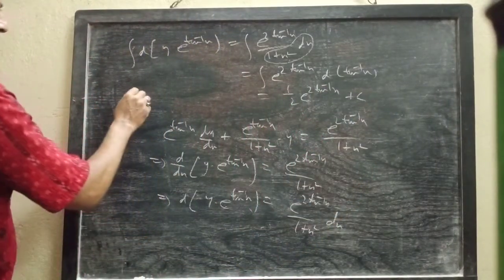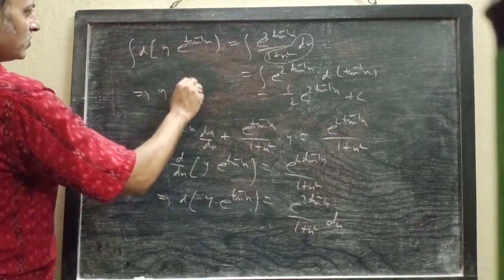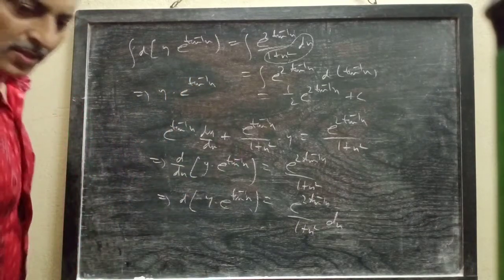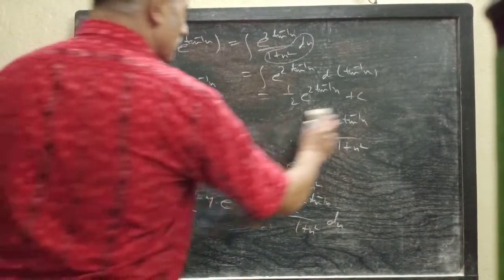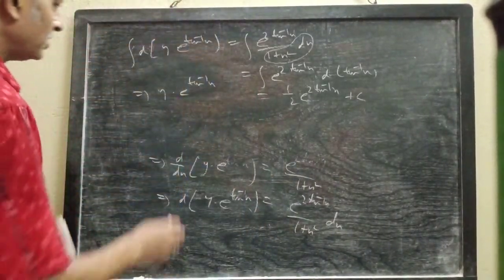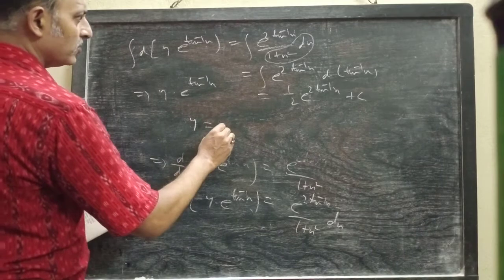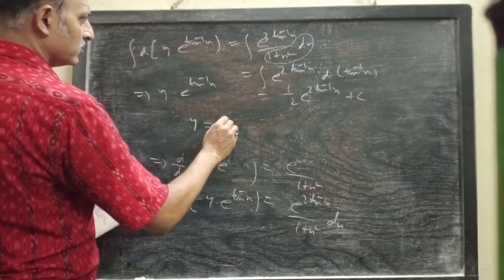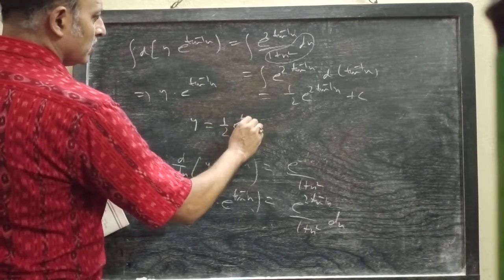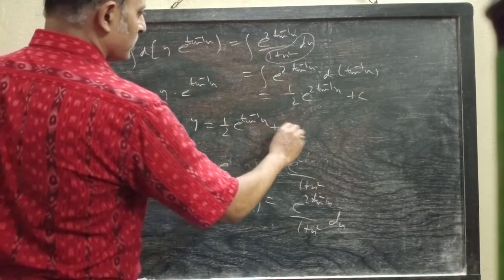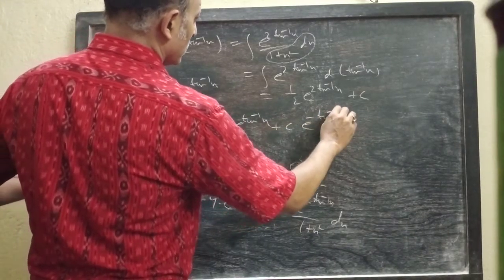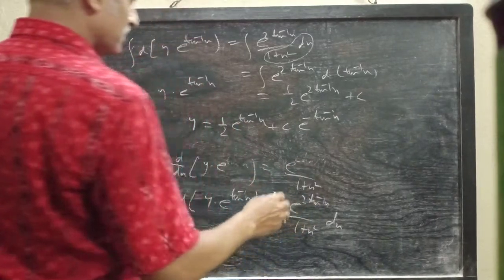The left side is y × e^(tan⁻¹x). So finally, your general solution can be written as y = ½ e^(tan⁻¹x) + c × e^(-tan⁻¹x).